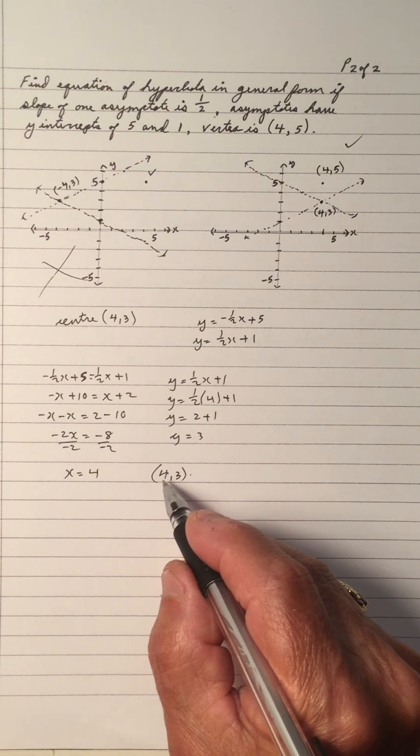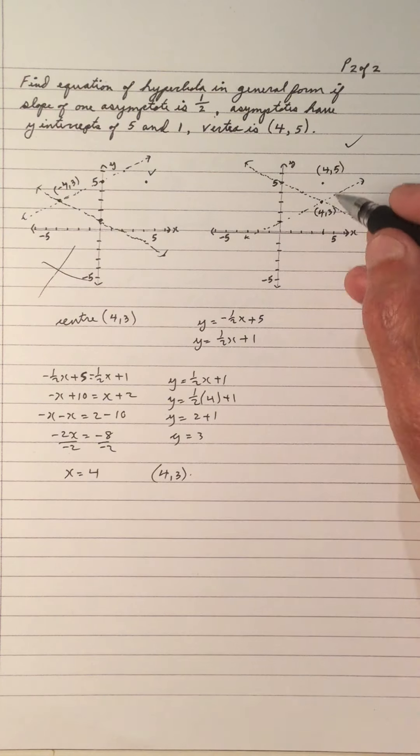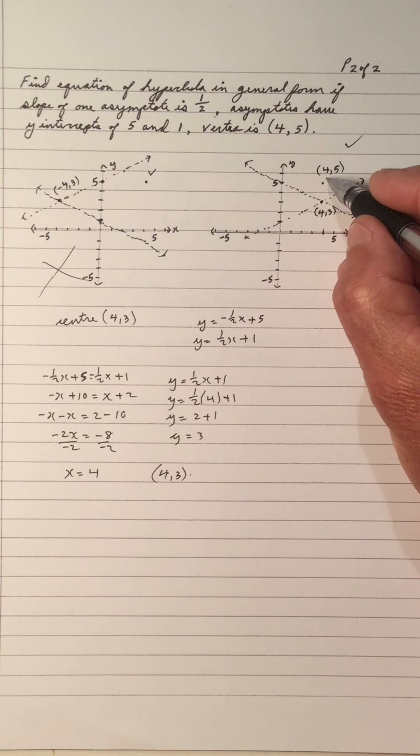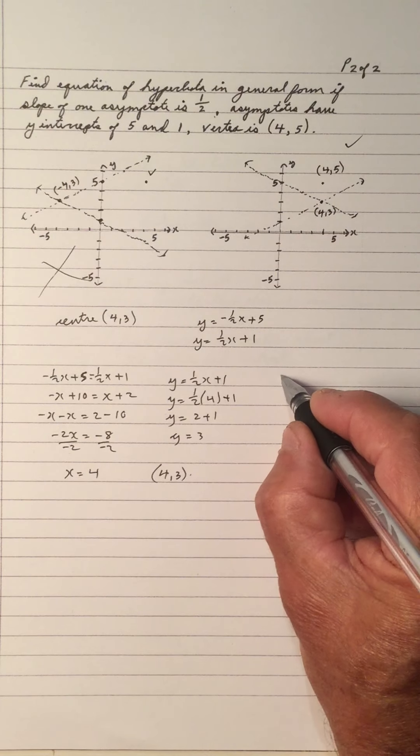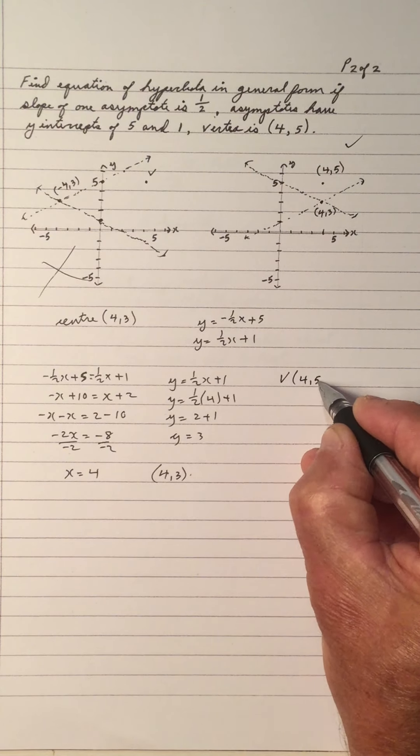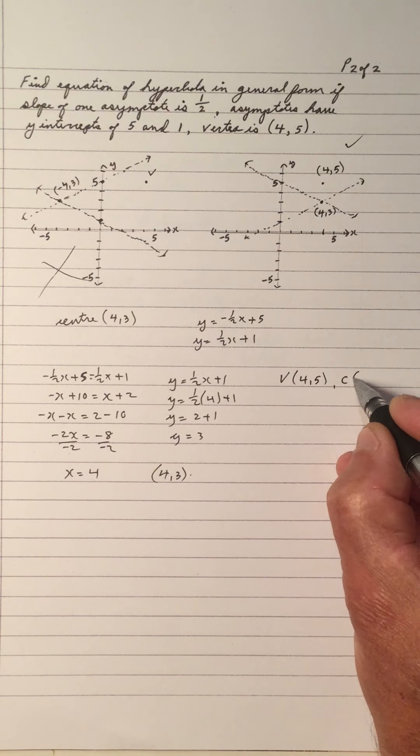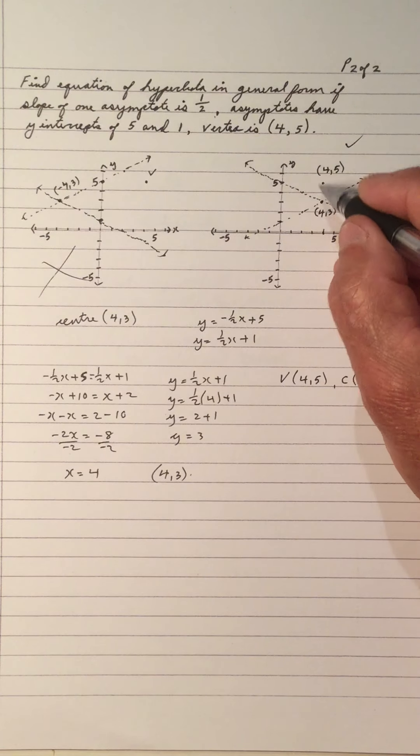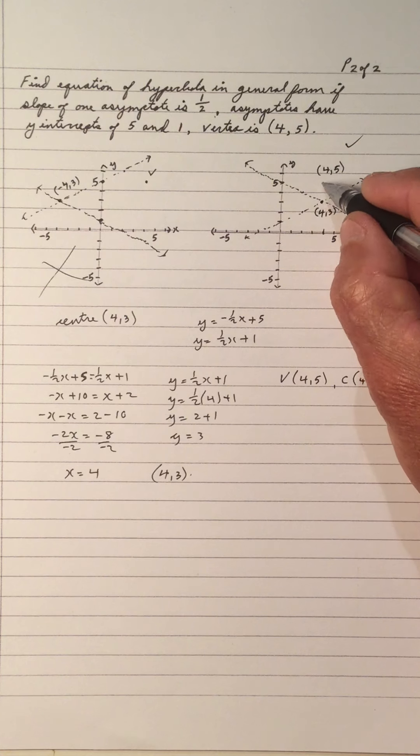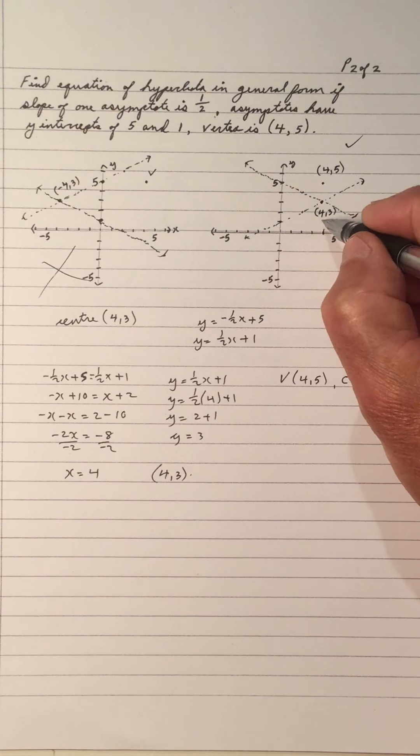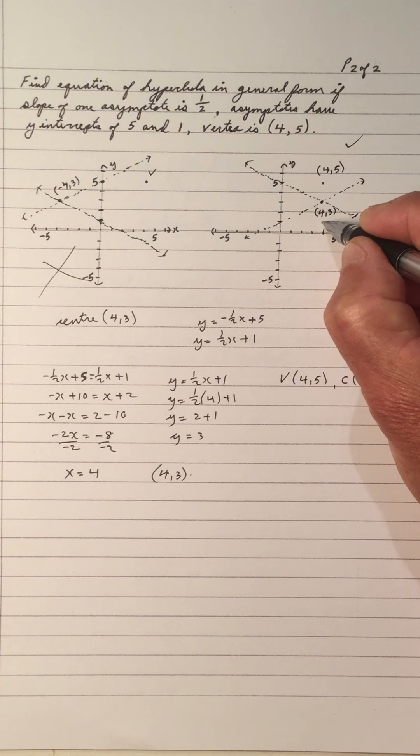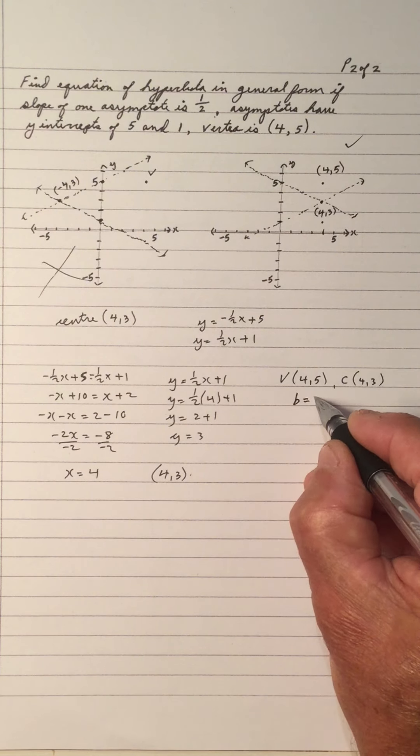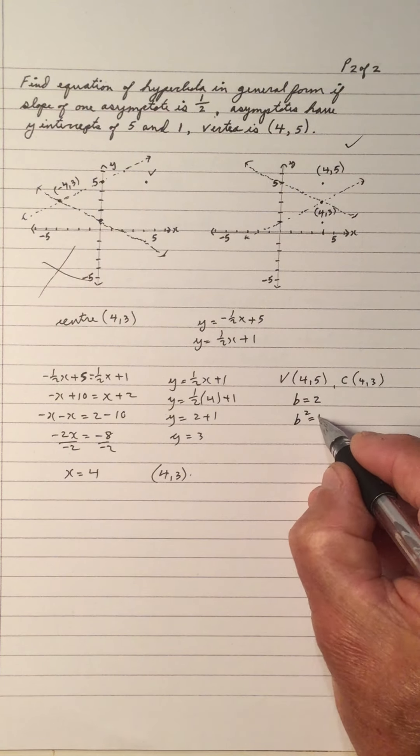So we have a center now. We have a center, but what we have to do now is notice the vertex. The vertex is at (4, 5), and the center is at (4, 3). That means the stretch here is 2. So from there to there is 2 units, 2 up. We could have the other vertex, it must be down here at 2, right here. What we have is a vertical stretch, so that means that b must be 2. So that means that b squared is 4.